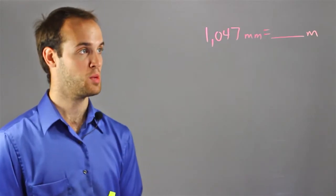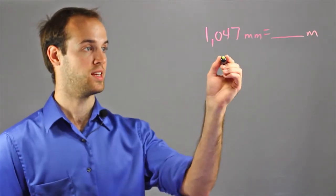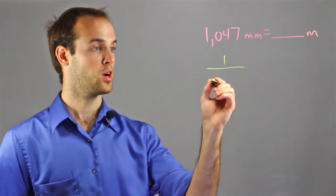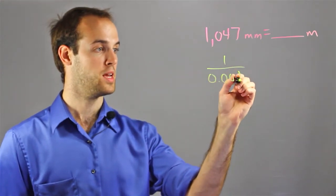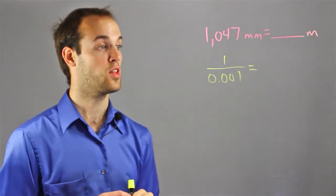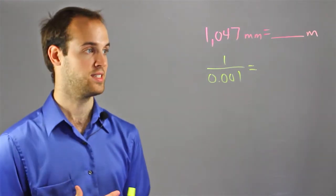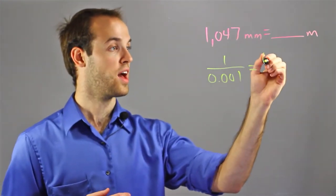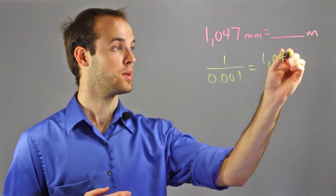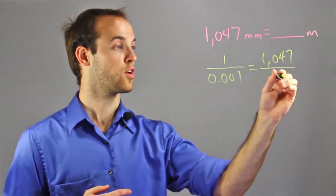I know that the relationship between meters and millimeters is, for every one millimeter, we have 0.001 meters. And I know that that's in the same proportion as 1047 millimeters over x meters.